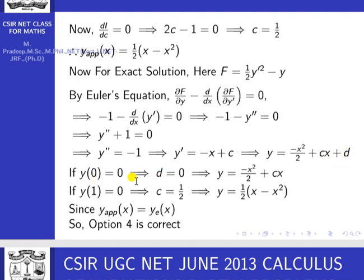Applying boundary conditions: y(0) = 0 gives c₂ = 0. y(1) = 0 gives −1/2 + c₁ = 0, so c₁ = 1/2. Therefore the exact solution is y = (1/2)x − x²/2 = (1/2)(x − x²).